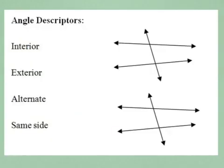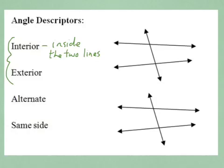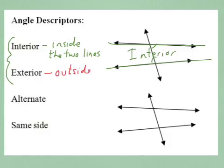Now let's begin talking about different types of angle pairs. We use specific descriptors to identify them. Each angle pair could be either interior or exterior. Interior means inside the two lines — like painting the interior of a house, or a car's leather interior. Angles that are interior are both between the two lines. Exterior angles are both outside the two lines.